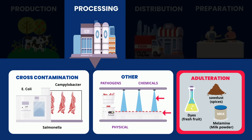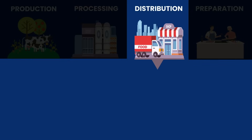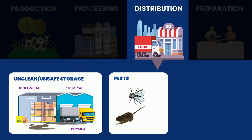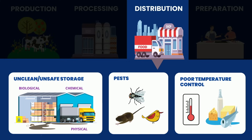Examples of how food can get contaminated at the distribution stage include storing food in areas that are not clean or safe, which can lead to the introduction of biological, chemical, or physical contaminants. Pests like rats, insects, or birds can introduce pathogens or physical contaminants like hair or droppings into food. And food that is not stored at the right temperature could lead to the growth of pathogens.